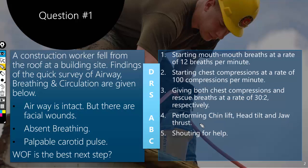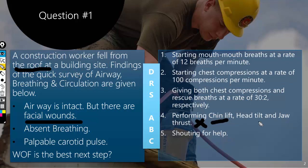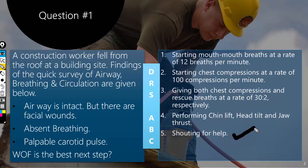The fourth stem — performing chin lift, head tilt, and jaw thrust — is a wrong answer because the patient has fallen from a roof and has facial wounds, so we must suspect neck injuries. When we suspect neck injuries we do not perform chin lift and head tilt, because fragmented vertebrae can pierce through the spinal cord and make the patient permanently paralyzed. The fifth answer is to shout for help — and of course you do need to shout for help.